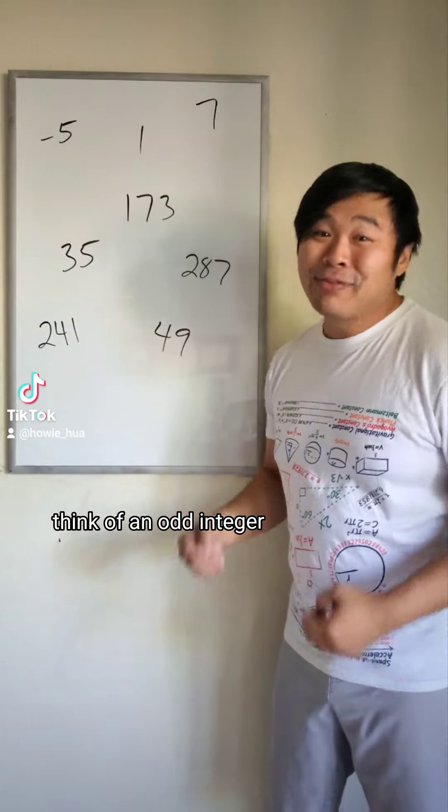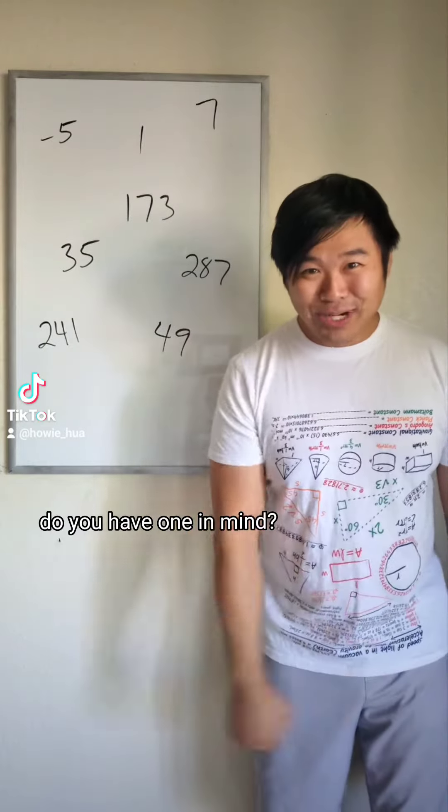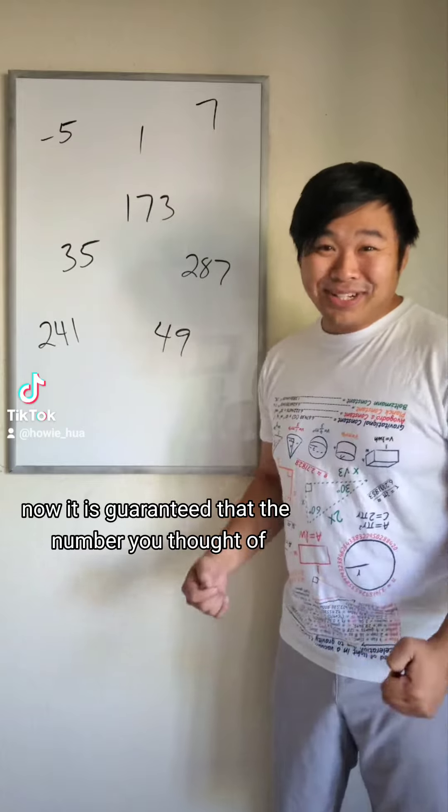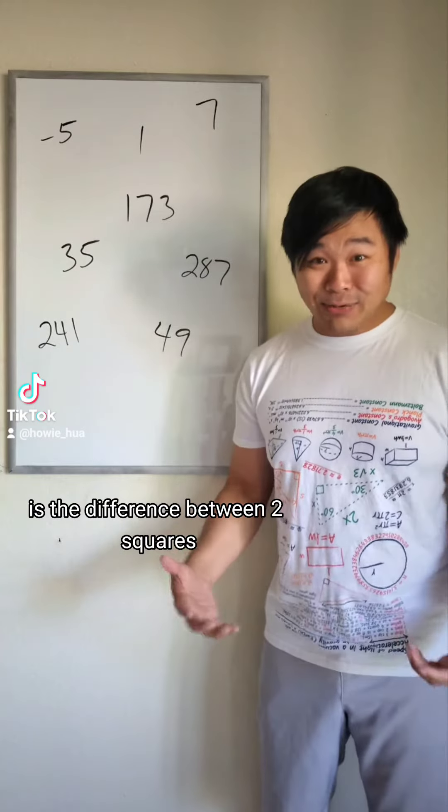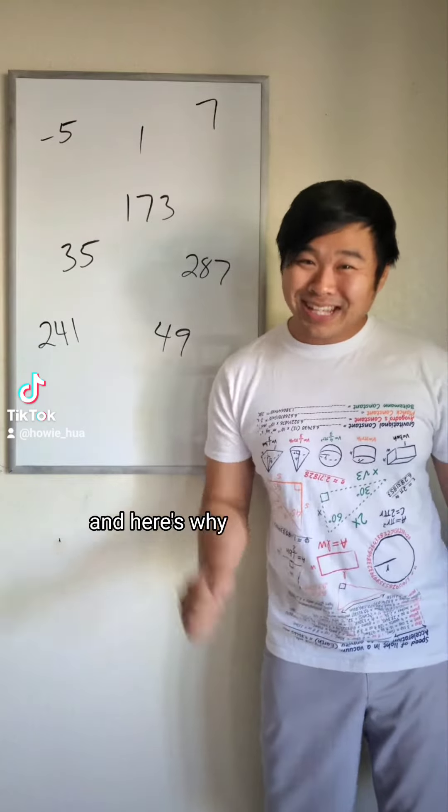Here's something interesting. Think of an odd integer. Do you have one in mind? Now it is guaranteed that the number you thought of is the difference between two squares, and here's why.